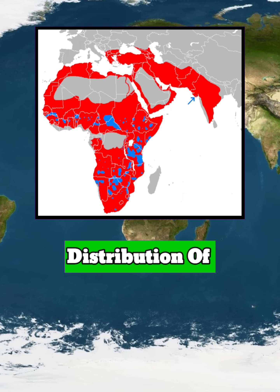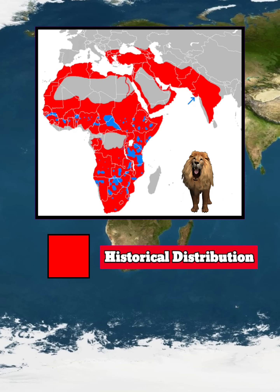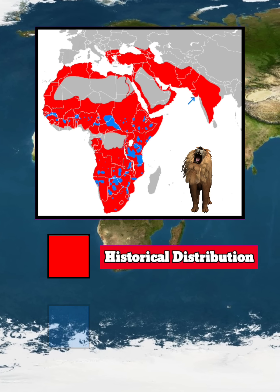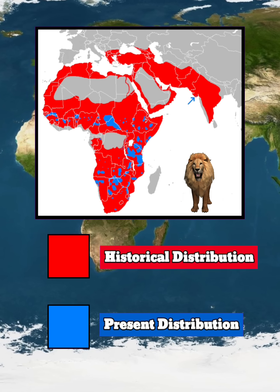These are the historic and present distribution of lions. Red shows the historic distribution of lions, and blue shows the present distribution of lions.